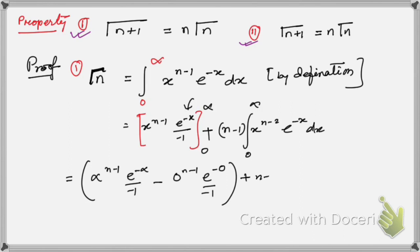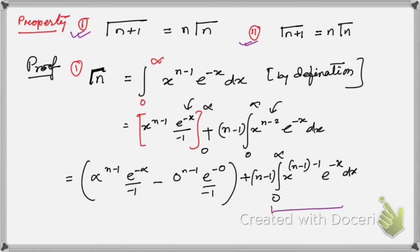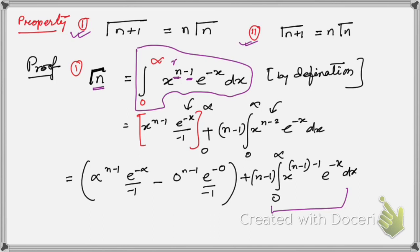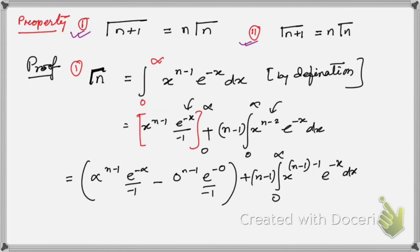So we're left with plus (n−1) times the integral from 0 to ∞ of x^(n−2) · e^(−x) dx. Now x^(n−2) can be written as x^((n−1)−1) · e^(−x) dx. Comparing this with the definition of the gamma function, this integral is exactly Γ(n−1).